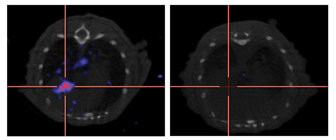An oncolytic virus is a virus that preferentially infects and kills cancer cells. As the infected cancer cells are destroyed by oncolysis, they release new infectious virus particles or virions to help destroy the remaining tumor.